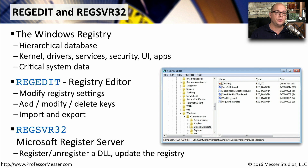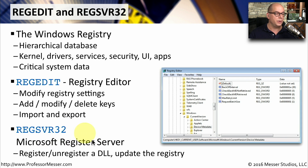If you need to register a DLL in Windows, you use RegSVR32 — the Microsoft Register Server. This utility allows you to register and unregister DLLs from the operating system, and it also updates the registry to use those new DLLs.